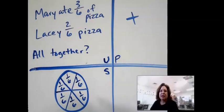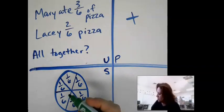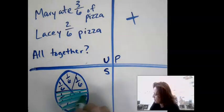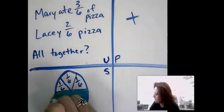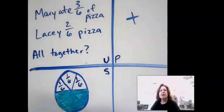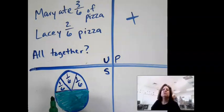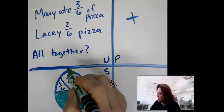And Mary ate three out of the six slices. So basically Mary ate half of this pizza. This is Mary. And Lacey ate two-sixths of the pizza. She ate two slices.